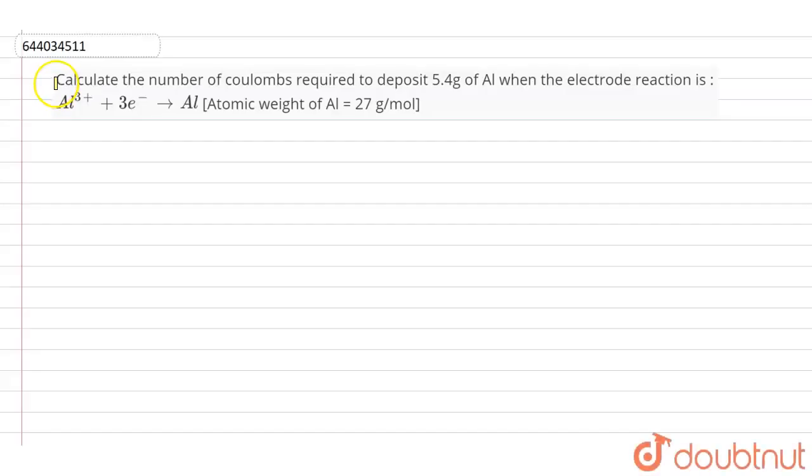Here is a question in which we calculate the number of coulombs required to deposit 5.4 grams of aluminium when the electrode reaction is Al³⁺ + 3e⁻ → Al.